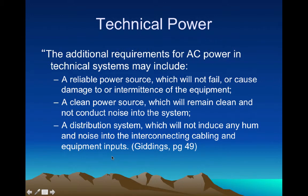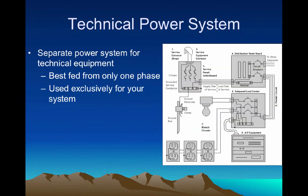Breaking out further, there are other requirements summarized in the Giddings book. You want the power system to be reliable — you don't want it to fail, so you may have a UPS (uninterruptible power supply) or battery backup, and possibly generator backup as well. You want it to be clean, with no interference or noise from other sources. And you want a distribution system designed so it won't induce any hum or noise into interconnecting cabling and equipment inputs. This gets into a technical grounding system, which we'll cover in a separate video.